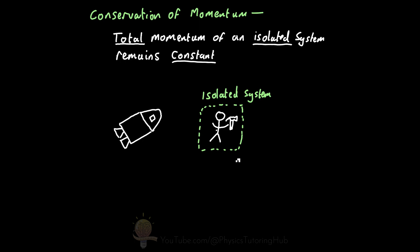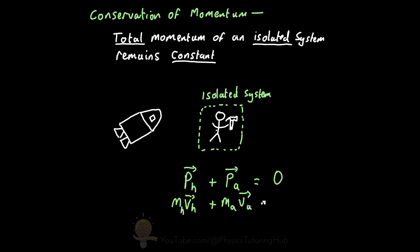The total momentum of your isolated system is simply the sum of the momenta of each object. So the momentum of the hammer plus your momentum as an astronaut will equal the total momentum in this isolated system. Because you're at rest with respect to your spacecraft, your momentum is zero because your velocity is zero. Momentum is simply the mass of an object multiplied by its velocity. Both you and the hammer have a zero velocity, and therefore your total momentum in the initial state is zero.